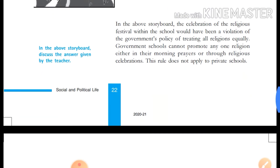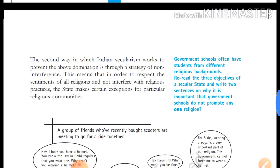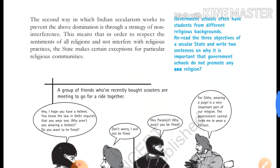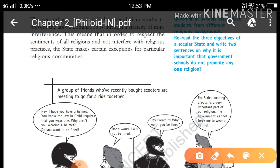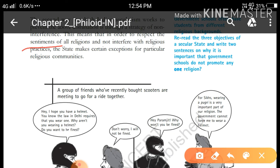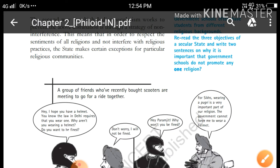The second way in which Indian secularism works to prevent domination is through a strategy of non-interference. This means that in order to respect the sentiments — sentiments means persuasion — of all religions and not interfere with religious practices, the state makes certain exceptions for particular religious communities.